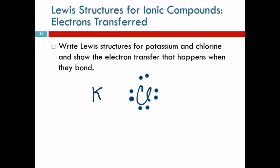But now potassium is not a neutral atom anymore. It has lost one of its negatively charged electrons. Its number of protons is the same, so now it has a charge of plus one. Chlorine gained one electron — one negative charge — so now it has an extra negative charge. Now it's chloride, the ion. We typically put brackets around these anions because that negative sign can get kind of lost in all the dots. We put brackets around the dots and put the charge on the outside. That's how potassium chloride is formed.